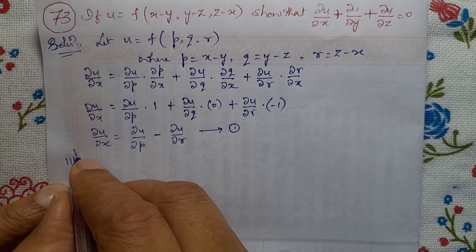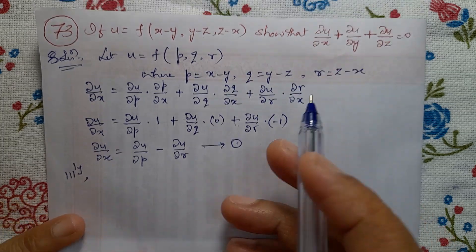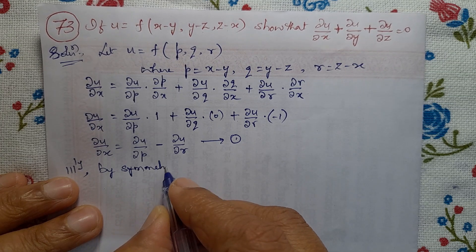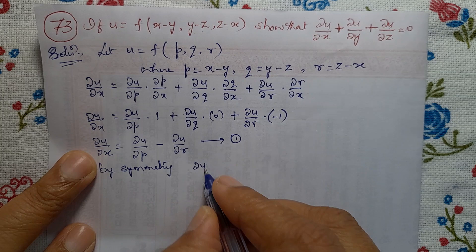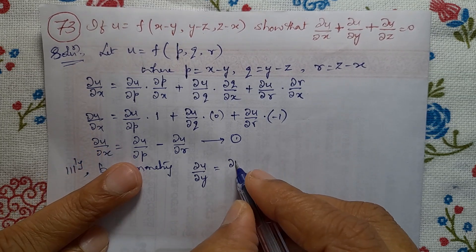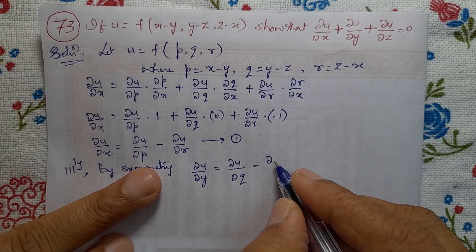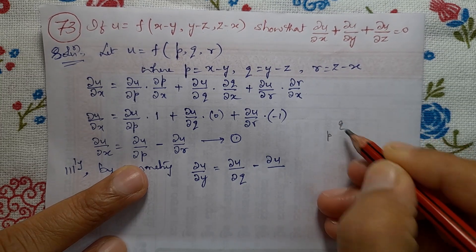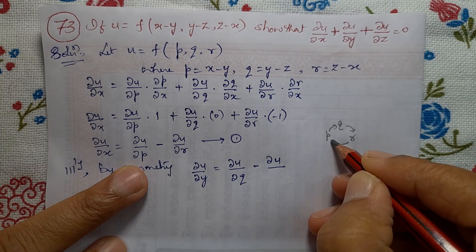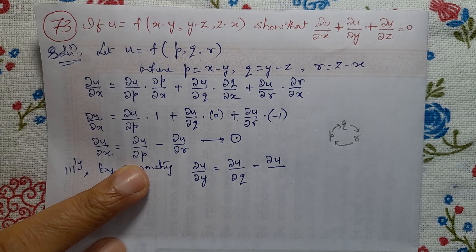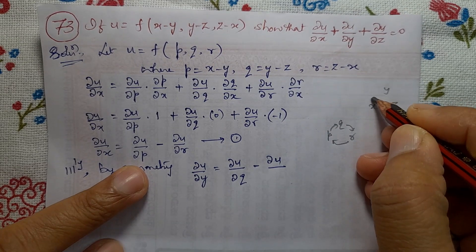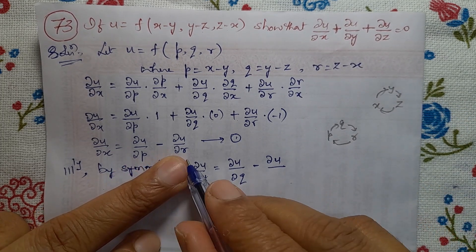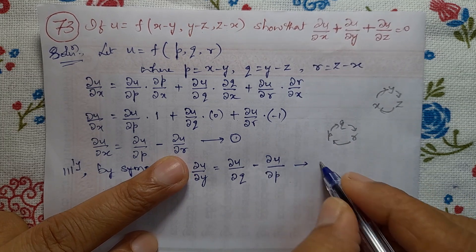Similarly, by symmetry, ∂u/∂y equals ∂u/∂q minus ∂u/∂p. Call this equation number 2.